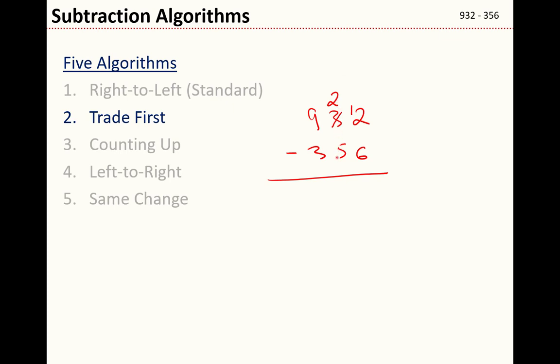Now I look at 2 minus 5. 5 is bigger, I can't do that, so I'll need to take that 9, turn it into an 8, bring the 1 over. Now I've done all of my trading. So now let's do the subtraction. 12 minus 6 is 6, 12 minus 5 is 7, 8 minus 3 is 5.